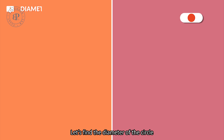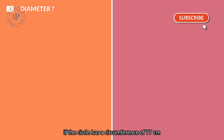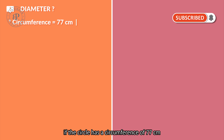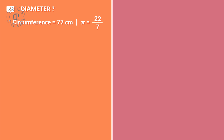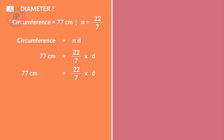Let's find the diameter of the circle. If the circle has a circumference of 77 cm, using pi equals 22 over 7: circumference equals pi d, so 77 equals 22 over 7 times d. Therefore, 77 times 7 over 22 equals d, giving d equals 24.5. Thus, the diameter equals 24.5 cm.